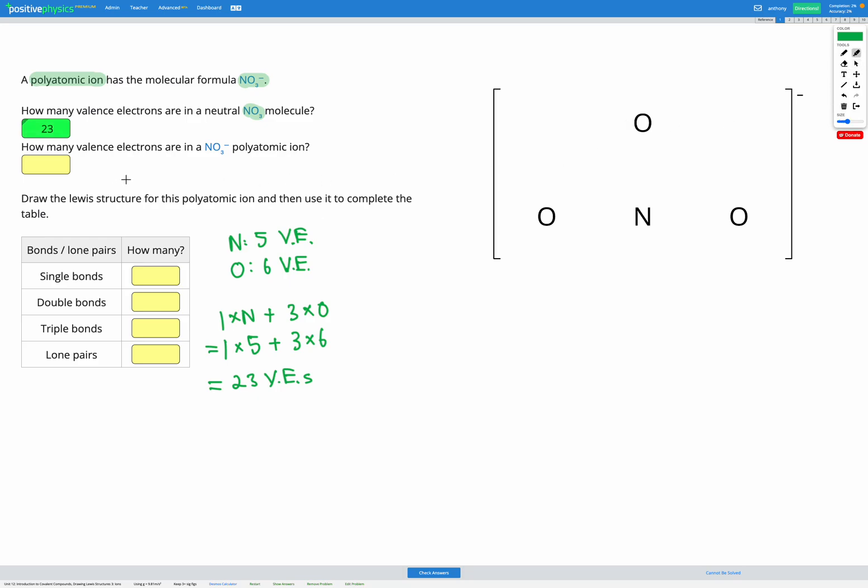Next it asks us, how many valence electrons are in a NO3 minus polyatomic ion? So we have to remember here that a negative charge means that we've gained electrons. Since electrons are negatively charged, when we gain them, we become more negatively charged. On the other hand, if we had a positive charge, that means that we've lost electrons.